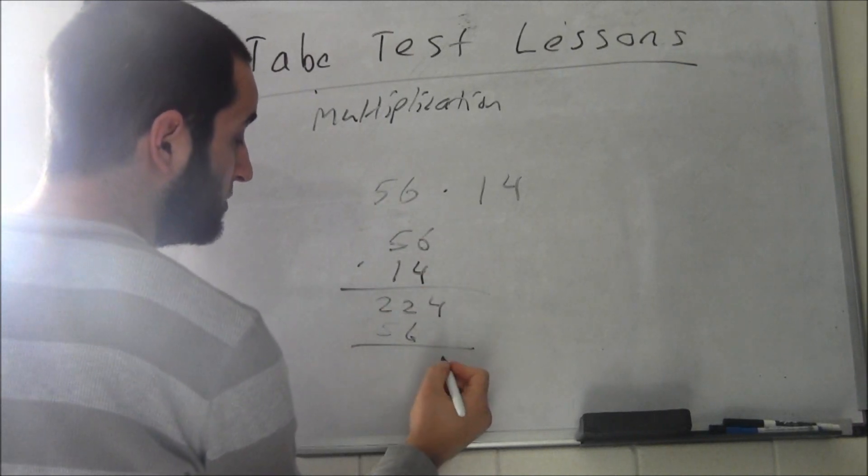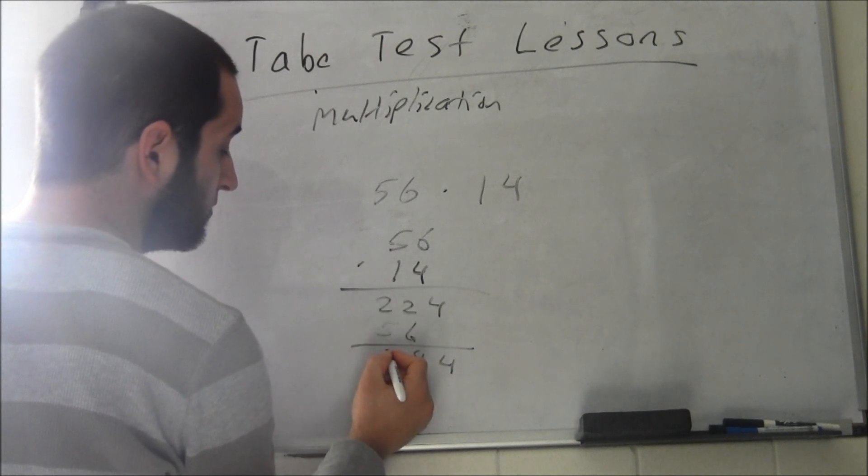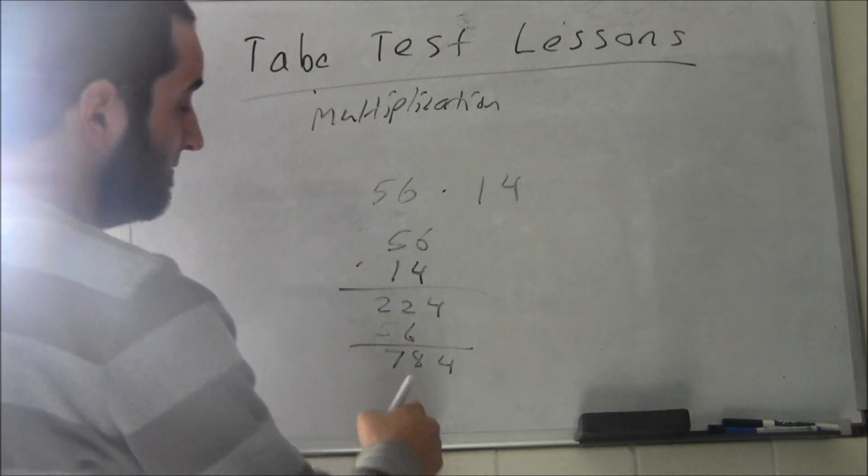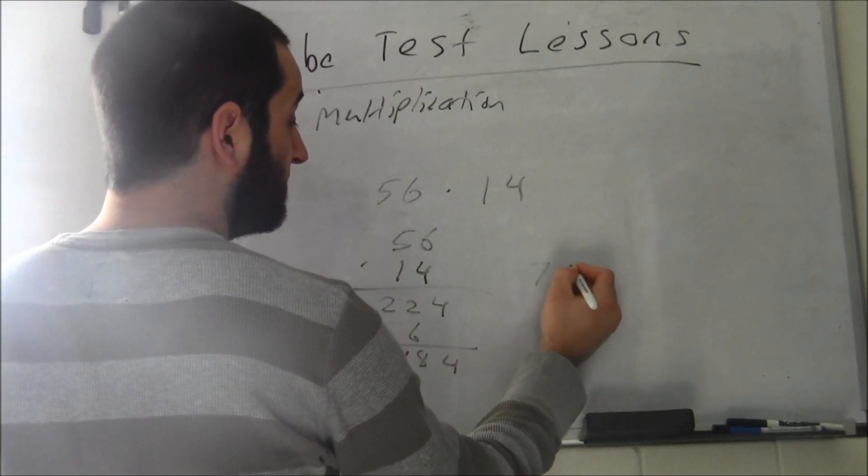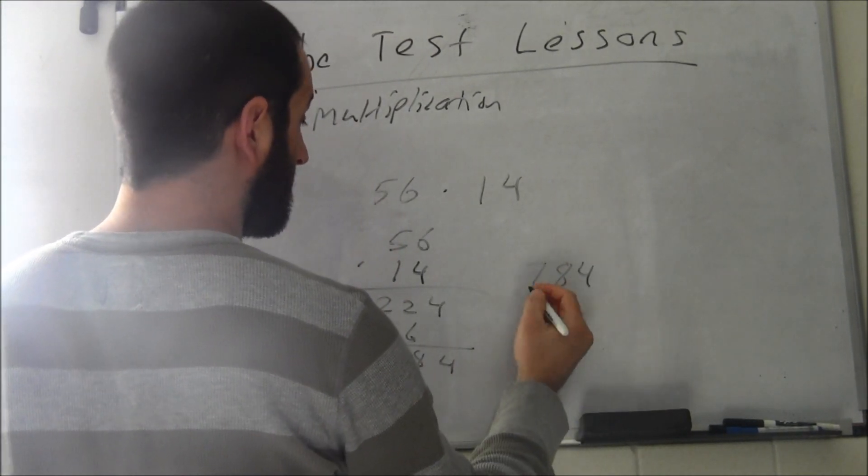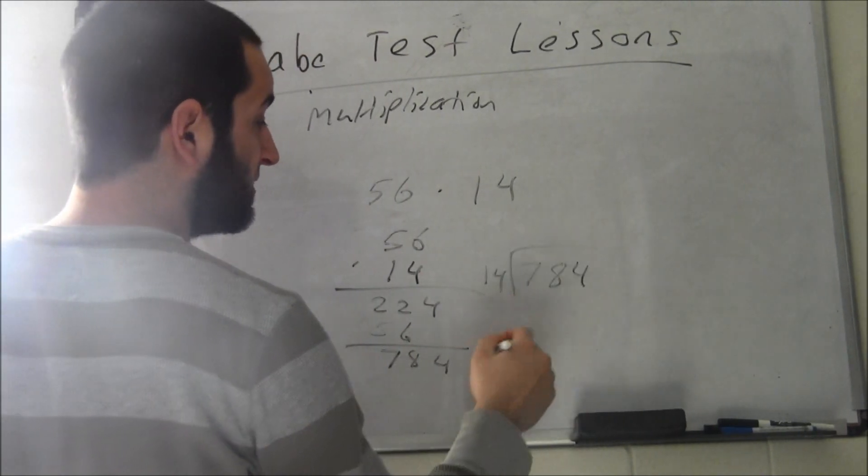Then you add them: 4, 6 and 2 is 8, so 5, 1, 2 is 7 - 784. You can do this to check it: do 784 divided by 14.